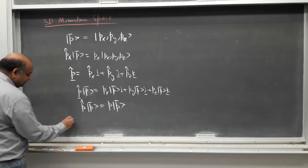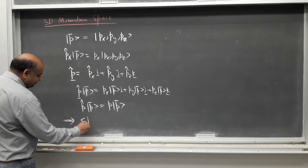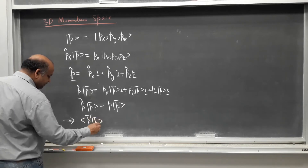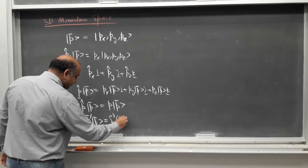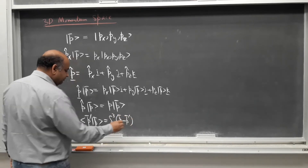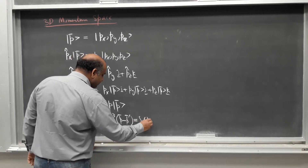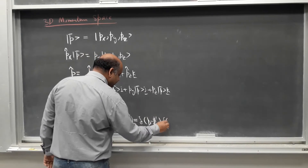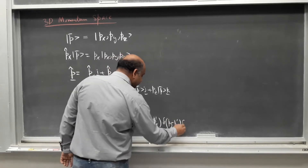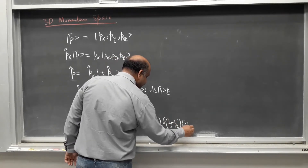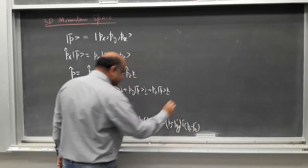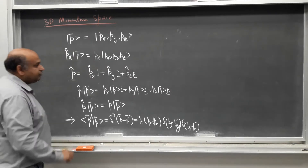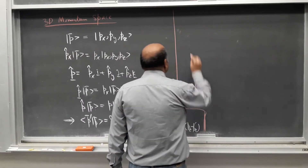Similar to the position basis, we have a similar orthogonality property. The momentum space inner product can be written as three Dirac delta functions put together, just like in 3D position space. Now let's derive the expression for the momentum operator in position basis.